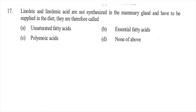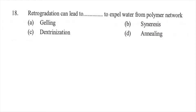Question seventeen: Linoleic and linolenic acids are not synthesized in the mammary gland and have to be supplied in the diet. They are therefore called — option A unsaturated fatty acids, option B essential fatty acids, option C polyenoic acids, or option D none of the above. The right answer is B, essential fatty acids. Question eighteen: Retrogradation can lead to expelling water from the polymer network, which is called — option A gelling, option B syneresis, option C dextrinization, or option D annealing.